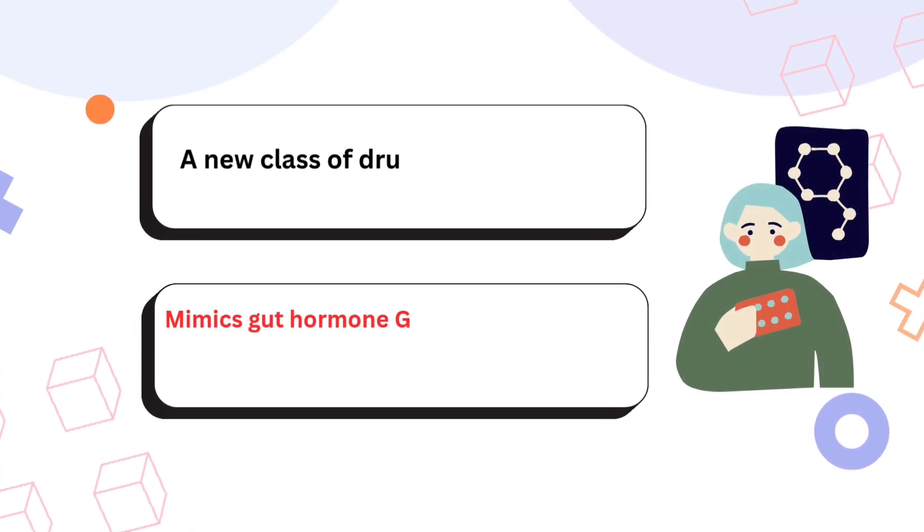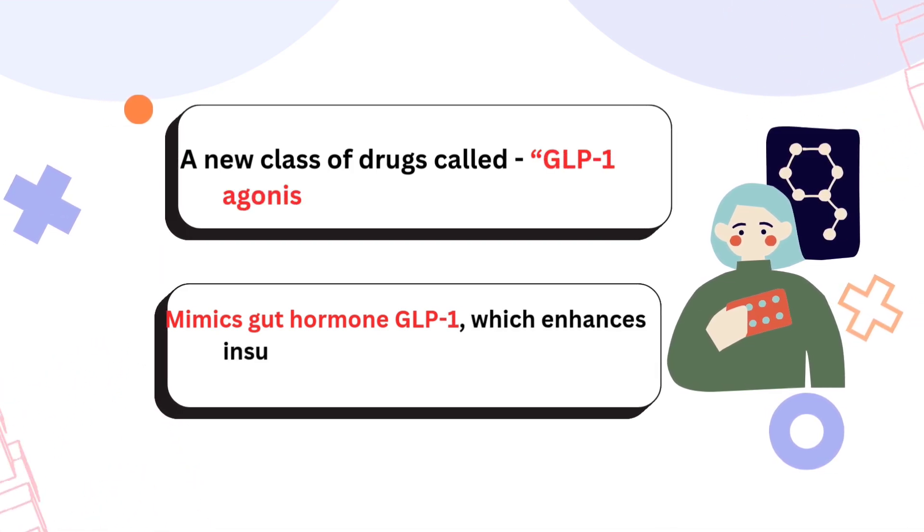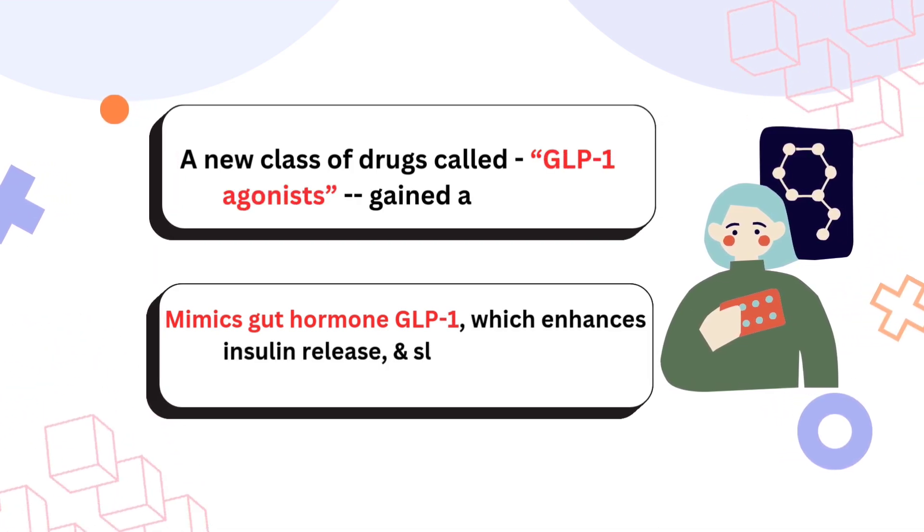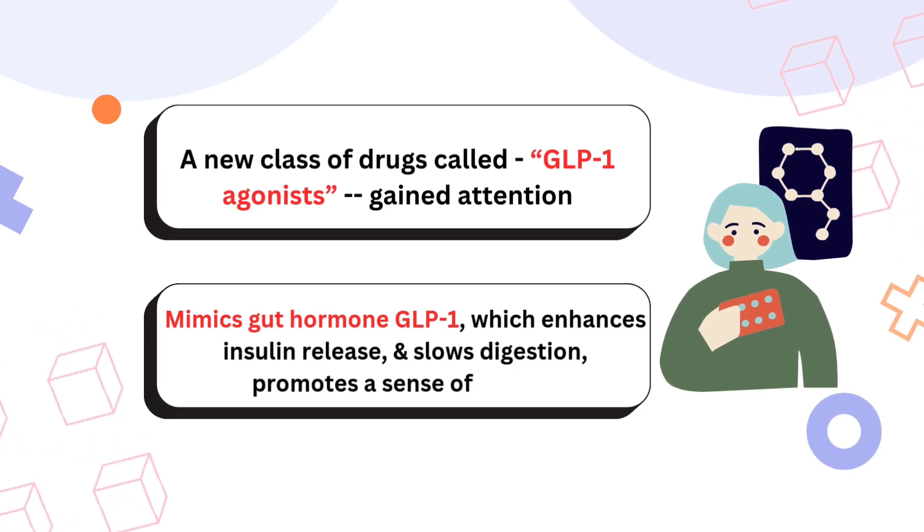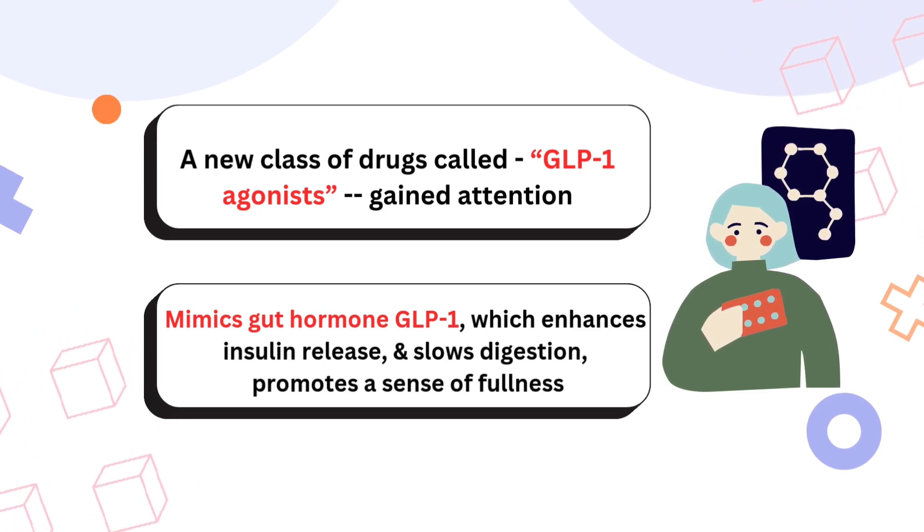A new class of drugs called GLP-1 agonists have got attention recently. It mimics gut hormone GLP-1 which enhances insulin release, slows digestion and promotes a sense of fullness in stomach.